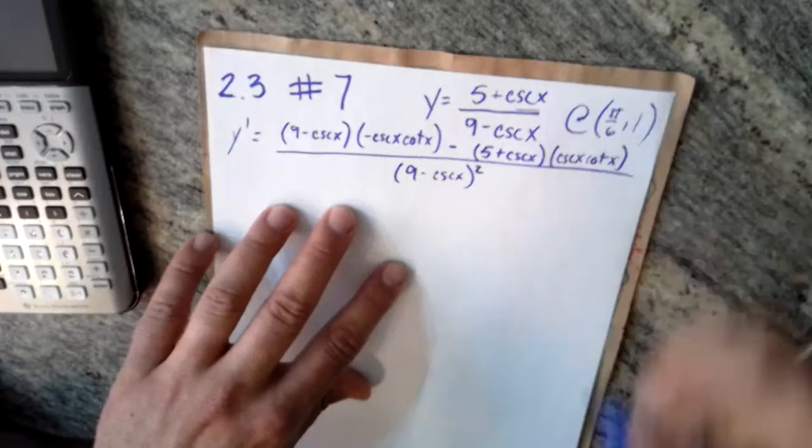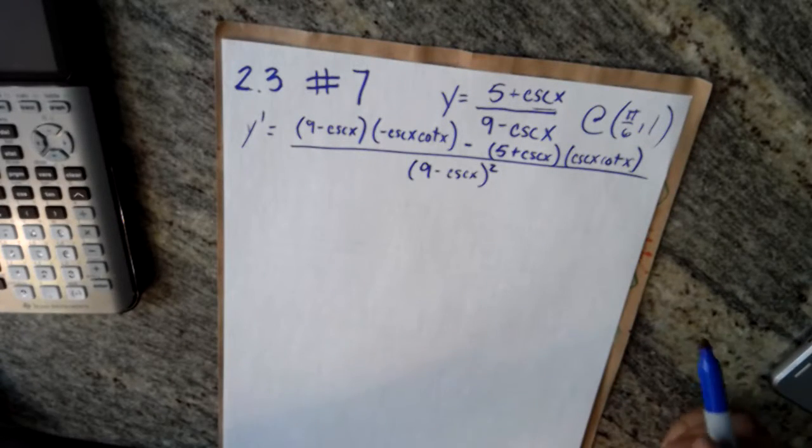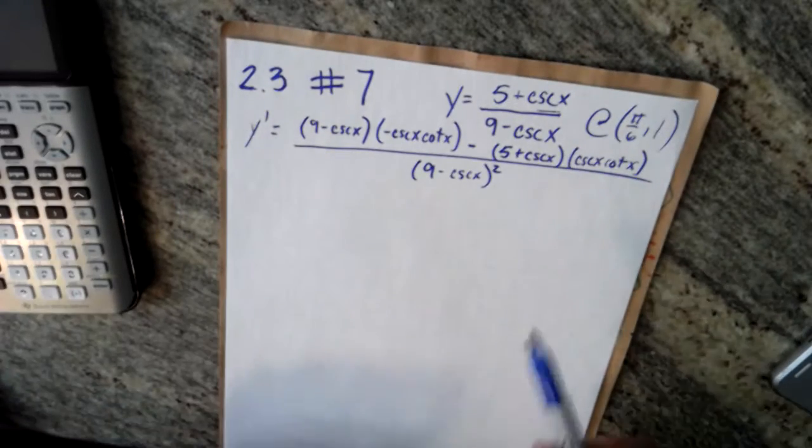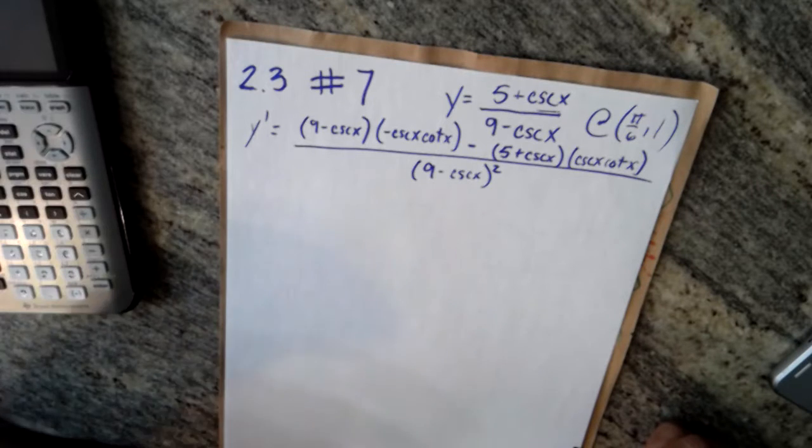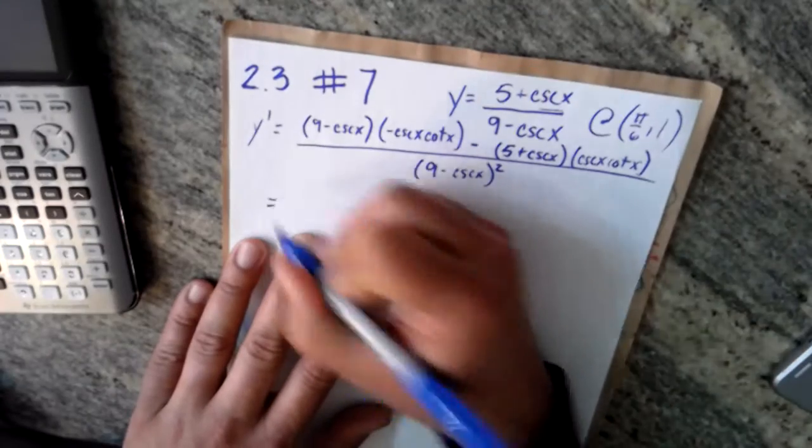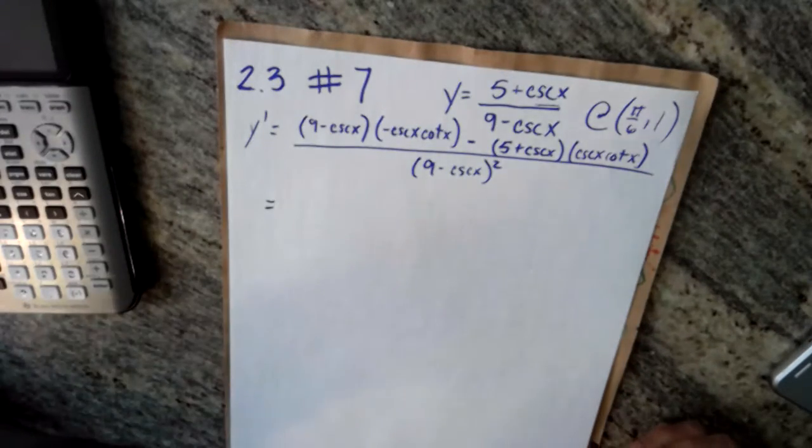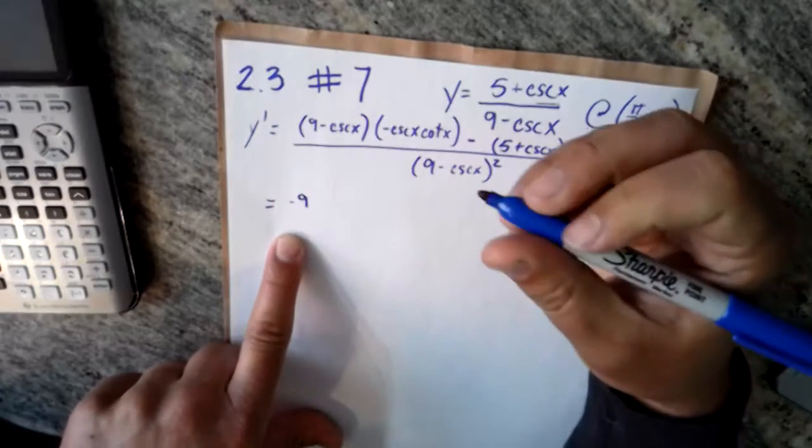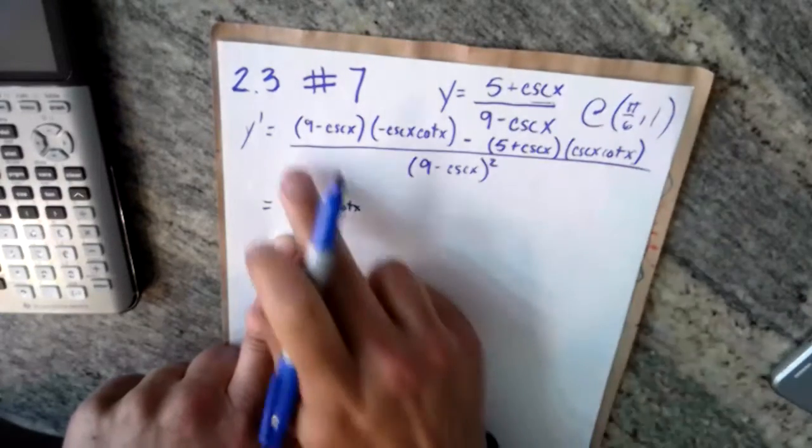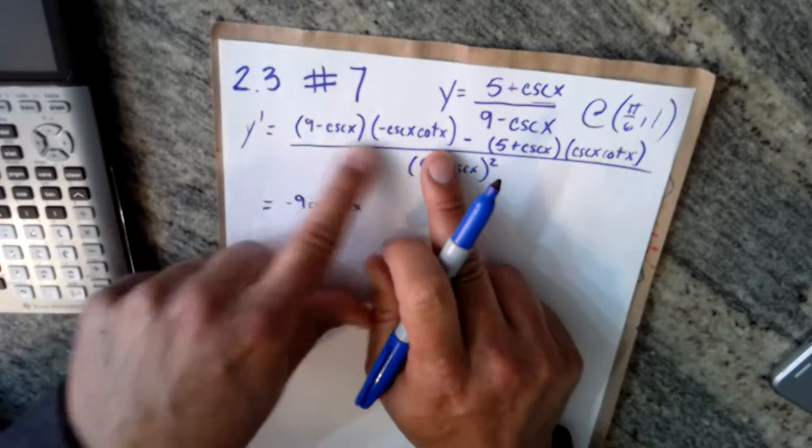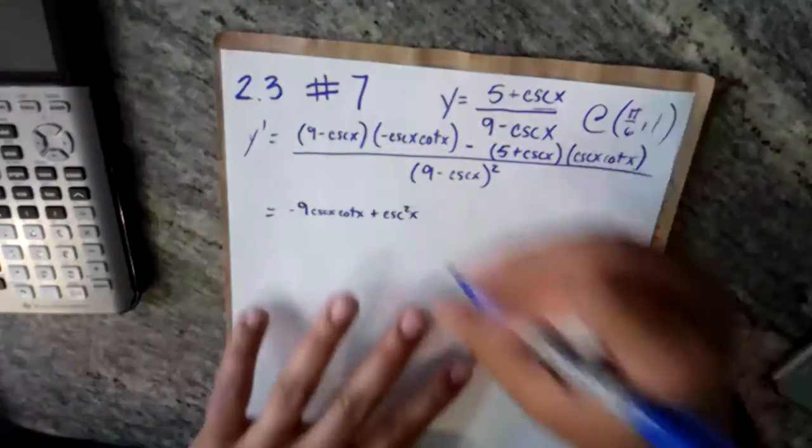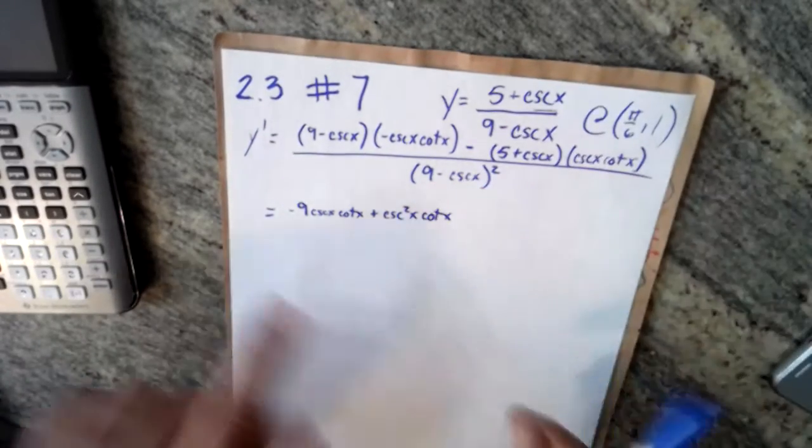Shout out to my buddy Lolo, I miss him. Alright, so now we look. All we have to do is take this point, take the x value, put it in for x, and whatever we get is our answer. But putting it into this function is so difficult. So I'm going to clean it up. Maybe you're really good at typing this into your calculator, but I'm not. So we get negative nine cosecant x cotangent x, and then minus minus minus, so plus cosecant squared x cotangent x.